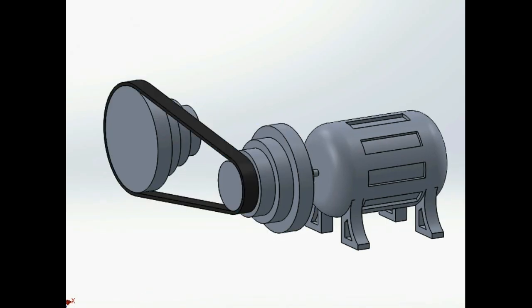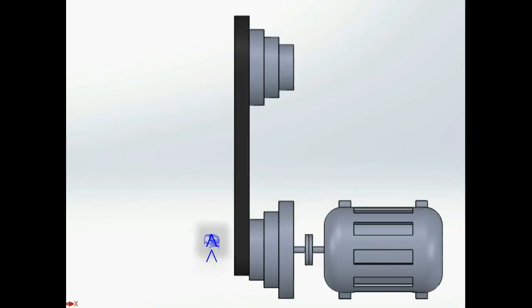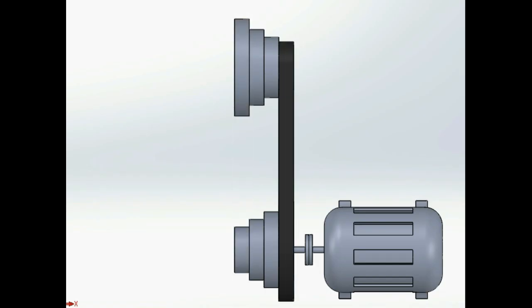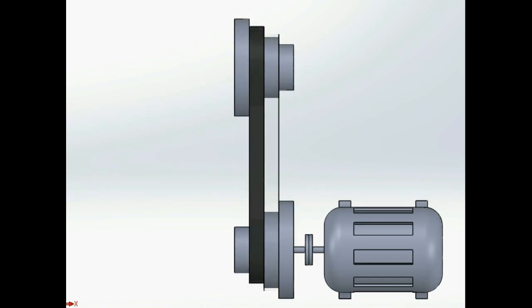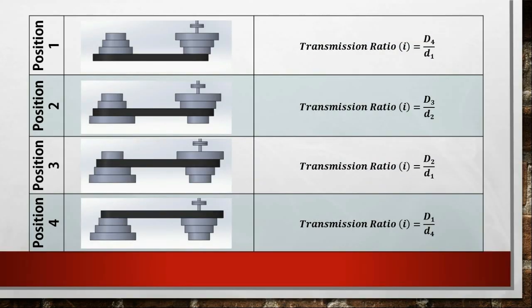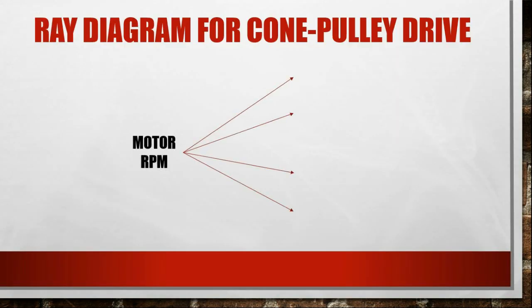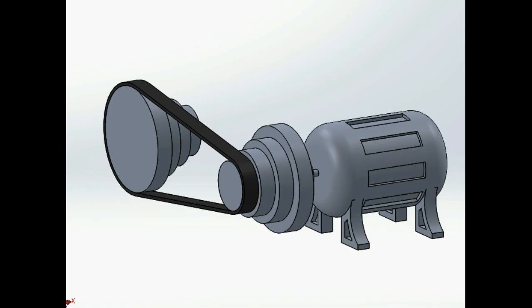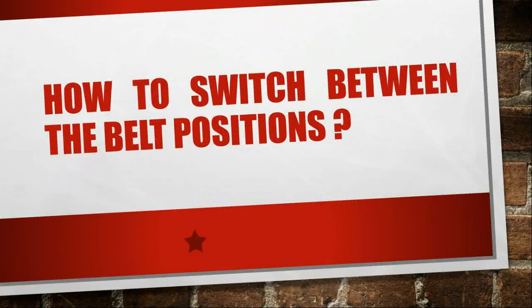The steps are used as a pulley of a belt pulley system to transmit power. Four different positions of the belt gives four different combinations of pulley diameters, hence four different transmission ratios. So from the constant motor RPM we get four different RPMs of the driven cone pulley for the four positions of the belt.